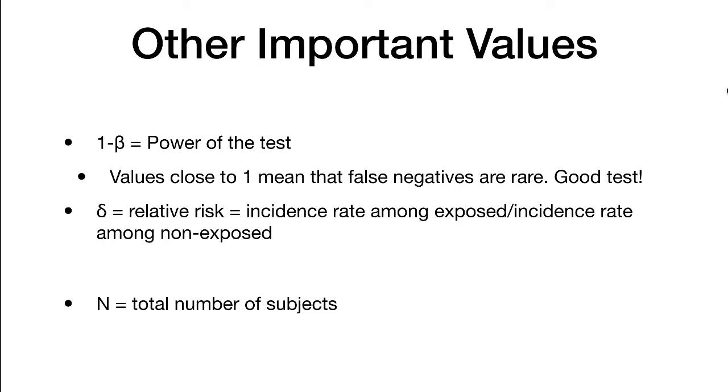Other important values. 1 minus beta is the power of the test, and values close to 1 mean that false negatives are rare, so it's a good test. Delta is the relative risk—the incidence rate among exposed individuals divided by the incidence rate among non-exposed. And n is the total number of subjects.